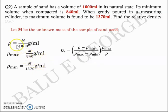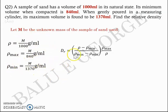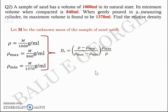Since M is the same throughout, on substituting into the equation M cancels out from the numerator and the denominator, and you get a value of around 69.8%, which is the relative density.